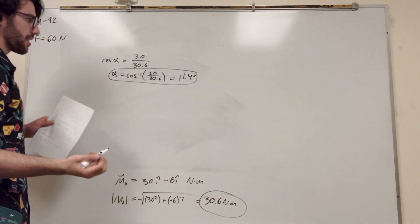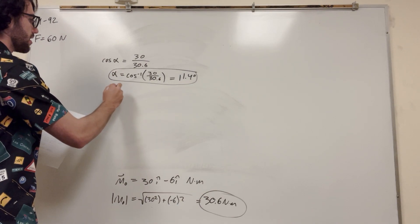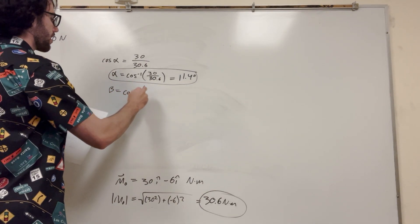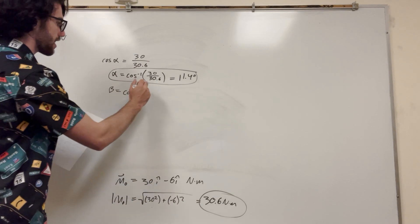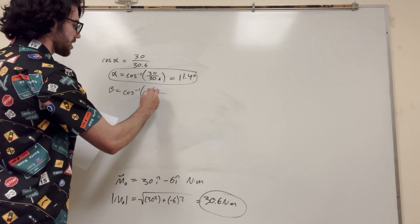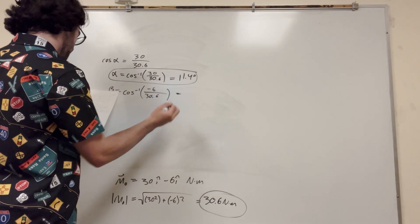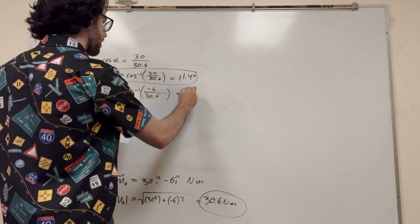So then let's do the same thing for beta and gamma. So beta is equal to inverse cosine of the y direction. So it's negative 6 this time over 30.6, which is the magnitude. Plug this in, you're going to get 101 degrees.